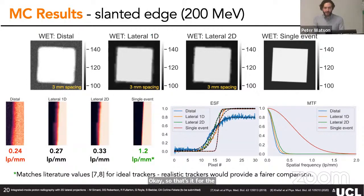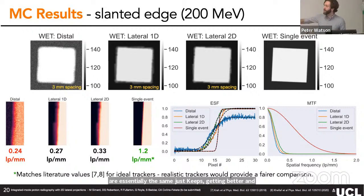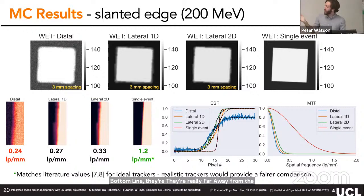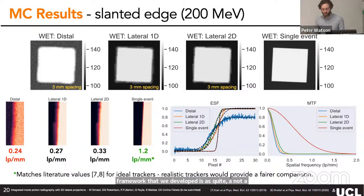Moving to the slanted edge for resolution analysis, the same conclusions hold — image quality keeps improving across reconstruction methods, though resolution values remain far from single-event imaging as expected. This demonstrates that our reconstruction framework has an important impact in maximizing achievable image quality. Now that we have Monte Carlo validation, we can move on to experimental results.